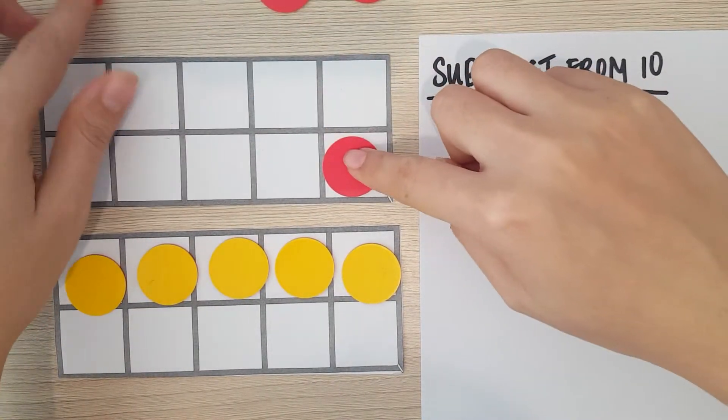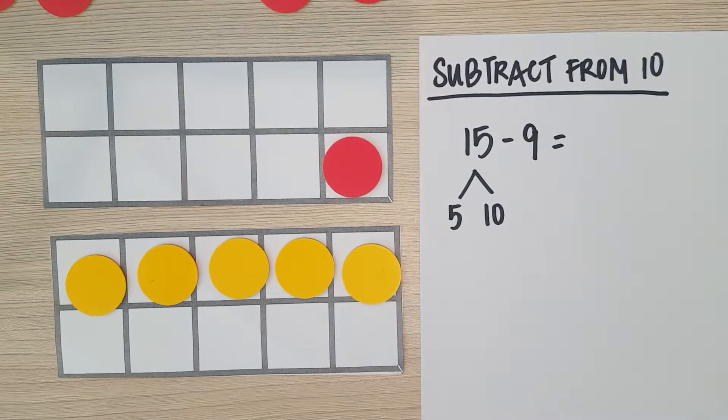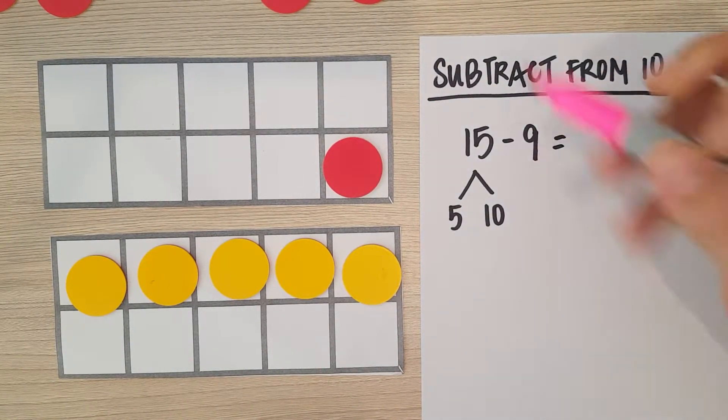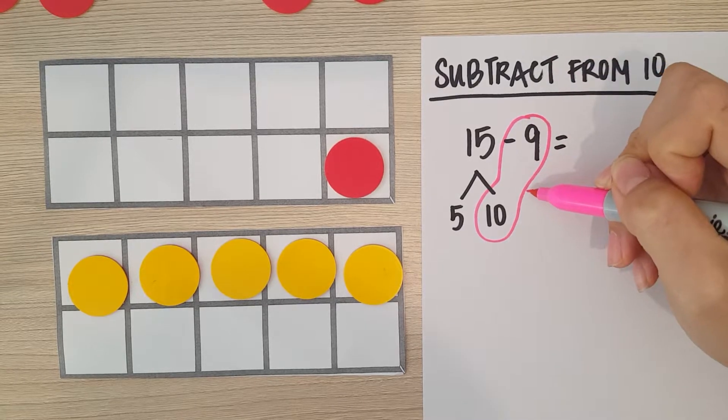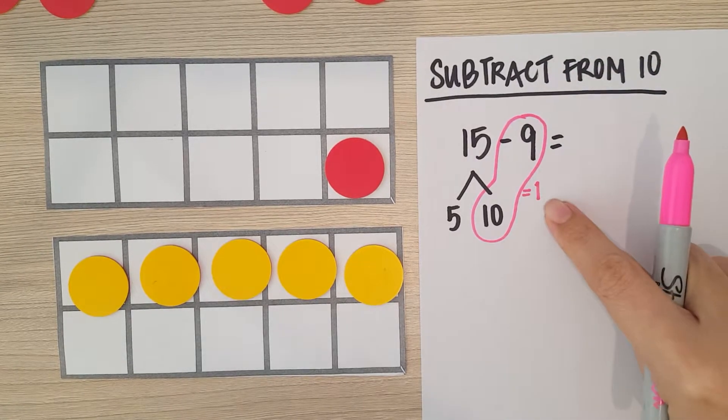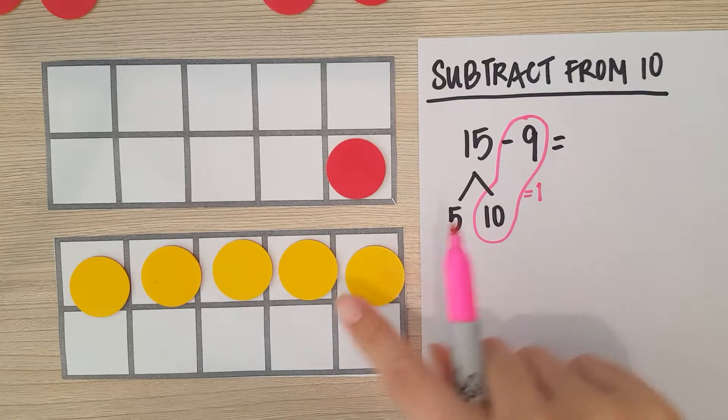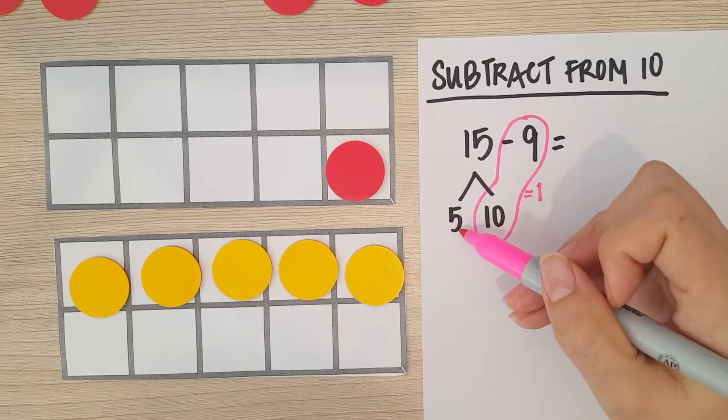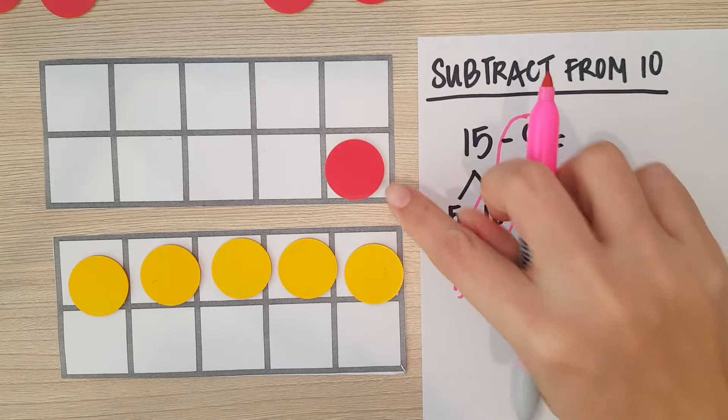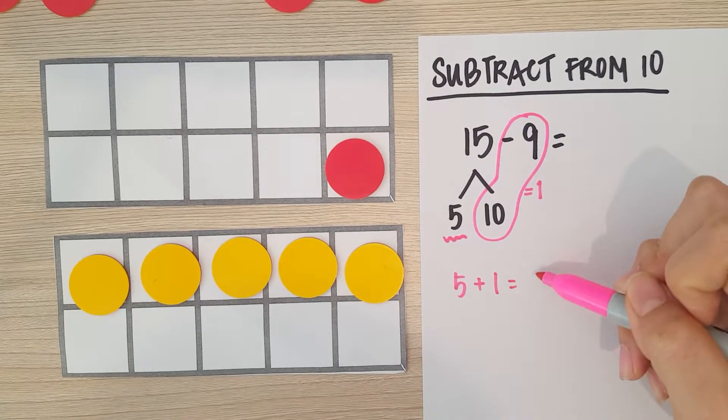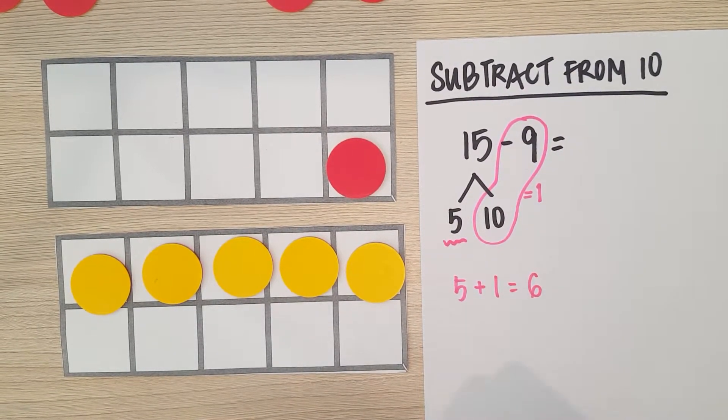I'm going to have one left. Let me circle that for you. So I'm going to take this away—take nine away from, subtract from 10. I'm left with one. So you see, I have five and one. I have five that I did not touch, and I have this one left, which will give me six.